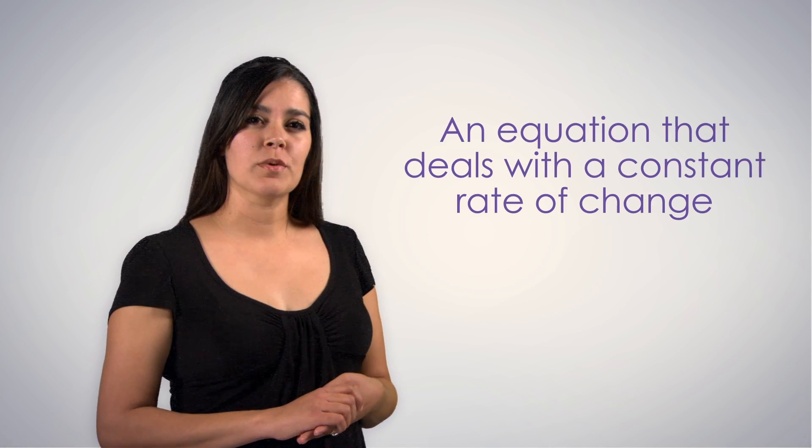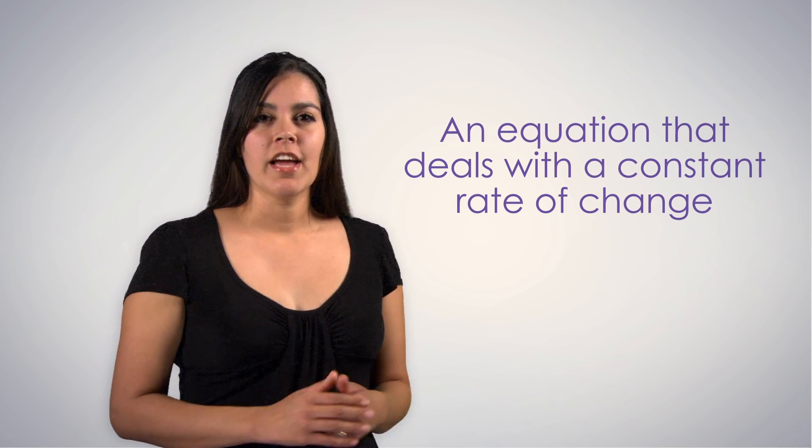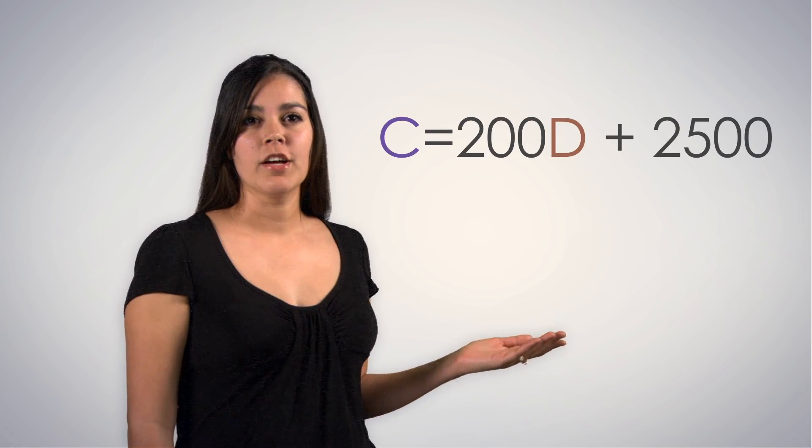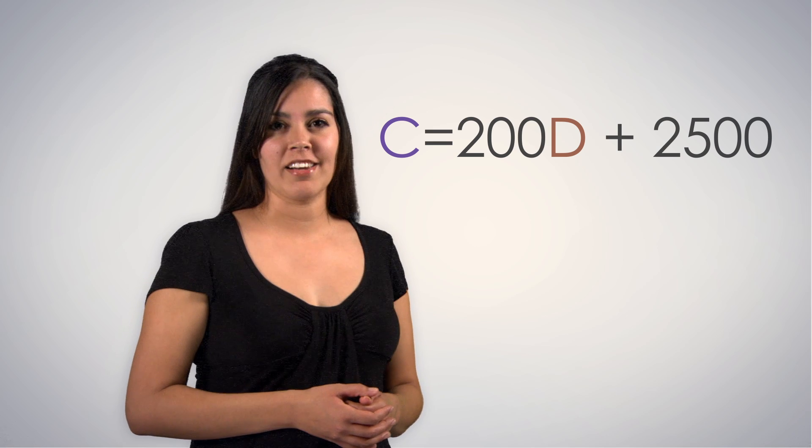In the last video, we defined a linear function as an equation that deals with the constant rate of change, and we used the function c equals 200d plus 2500 to describe the cost of taking your band on tour.